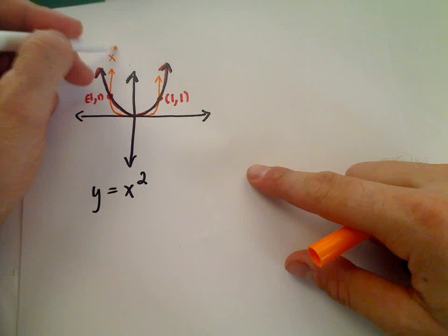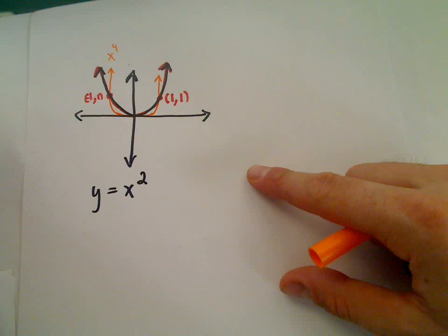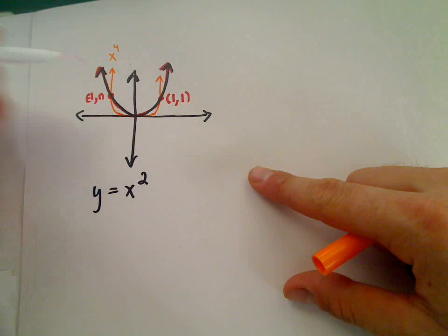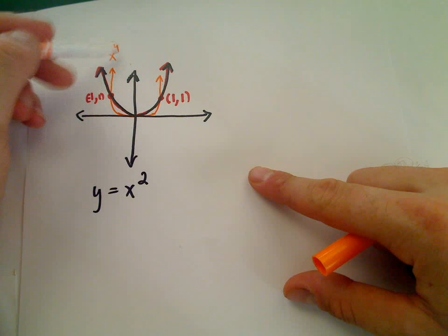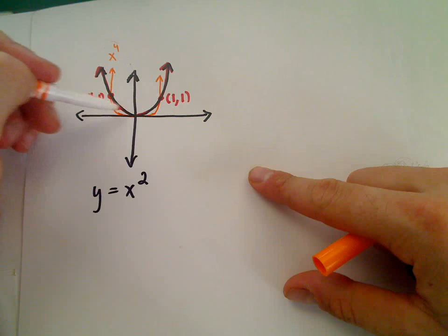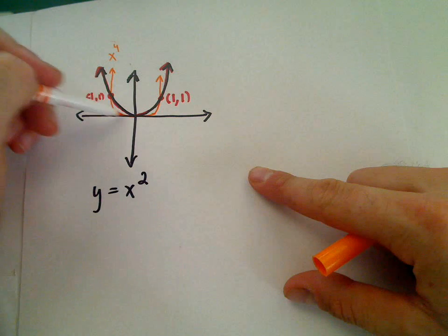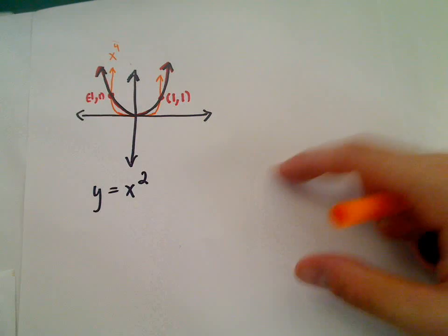For example, this could be the graph of y equals x to the fourth. It's got that parabola shape, that u shape to it. The higher the power is, if it's an even power, it'll be flattened out more so between zero and one, but then it'll be steeper.